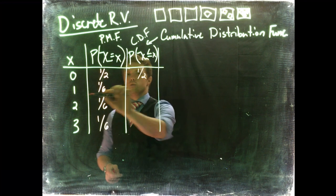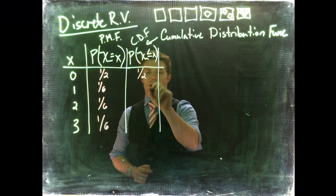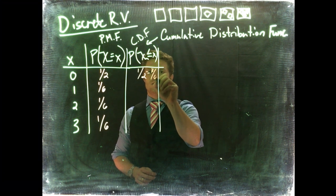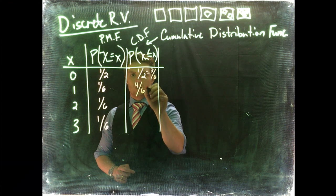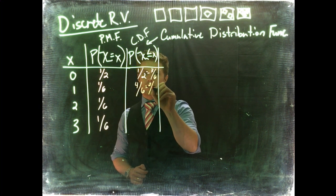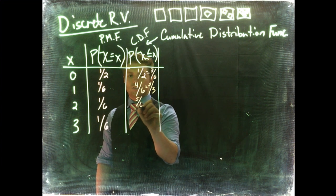Okay, so less than or equal to one is going to be, well, if we convert one-half, that's also equal to three-sixths. So this would be four-sixths, which we can simplify down to two-thirds if you want. And then this guy is going to be five-sixths.